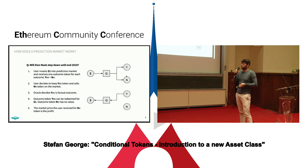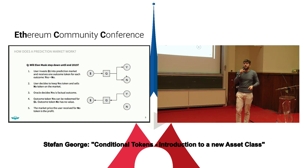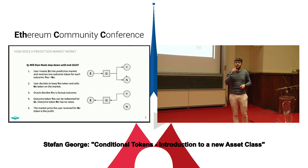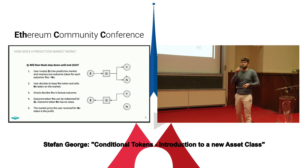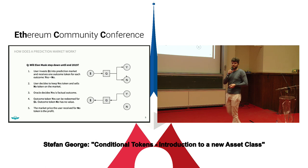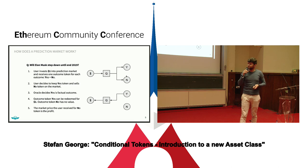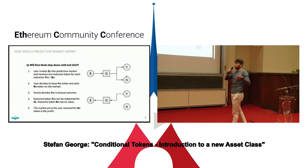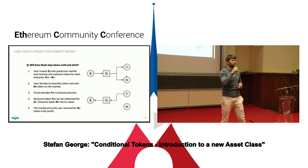At some point the Oracle will decide which outcome is the factual outcome. Let's say in this case yes, Elon Musk stepped down. Then the Oracle provides this information to the smart contract, and the smart contract will allow to redeem the one DAI that the user initially put in by sending the yes outcome token back to the smart contract. Essentially the no token that was sold by the user is his profit. That's how all prediction markets work, whether implemented with Augur, Gnosis, or any other system.